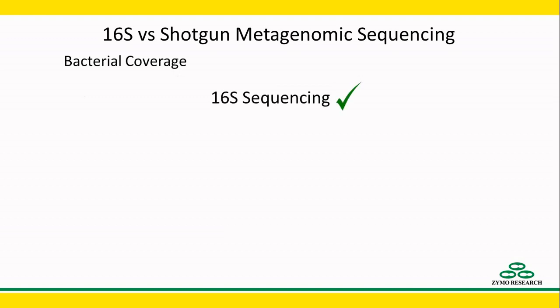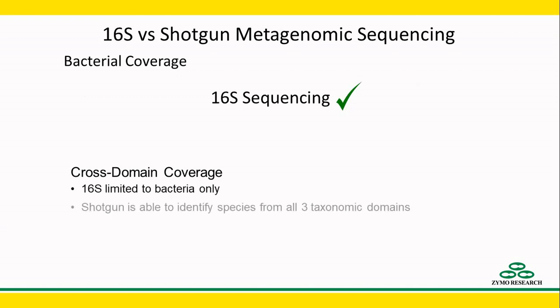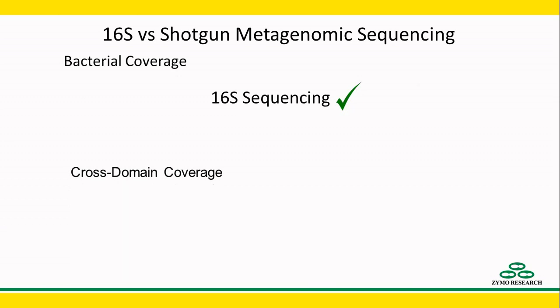But 16S is limited to bacterial identification only, while shotgun is able to identify species from all three taxonomic domains. So if the detection of eukaryotes and archaea are important to your study, shotgun sequencing has the advantage.